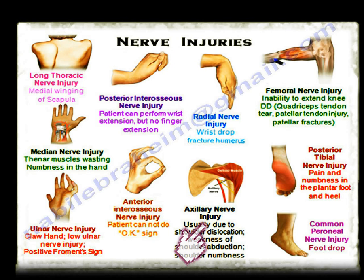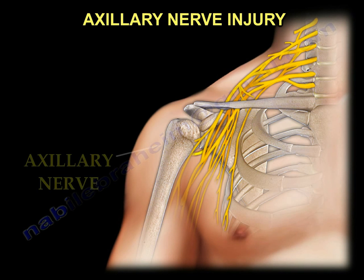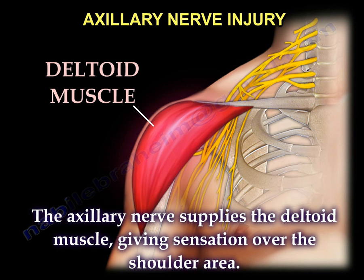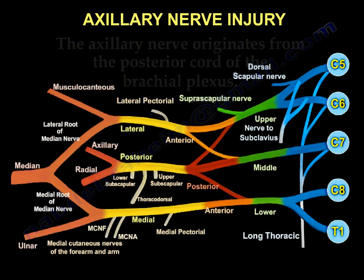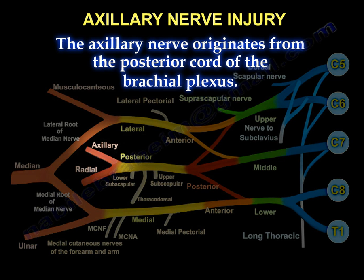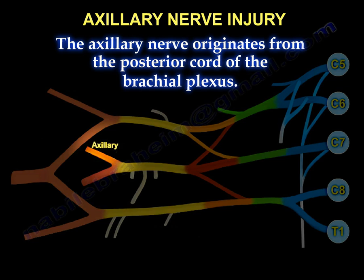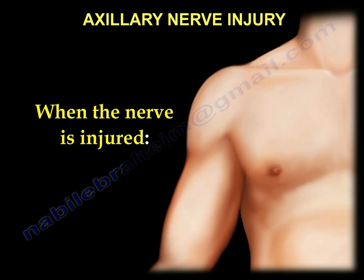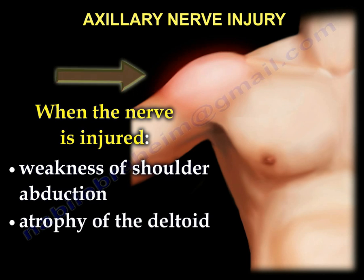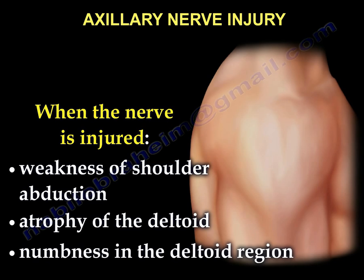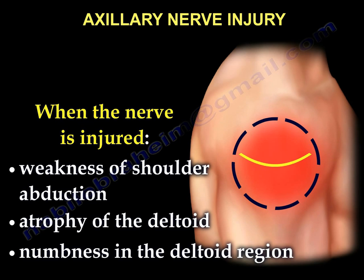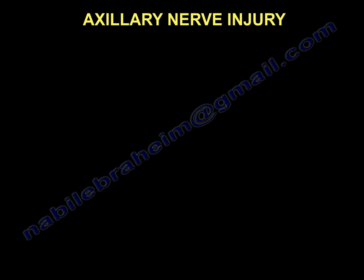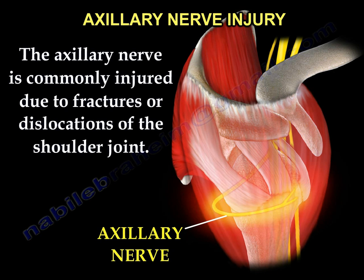Axillary Nerve Injury. The axillary nerve supplies the deltoid muscle, giving sensation over the shoulder area. The axillary nerve originates from the posterior cord of the brachial plexus. When injury to the axillary nerve occurs, there will be weakness of shoulder abduction, atrophy of the deltoid, and numbness in the deltoid region. The axillary nerve is commonly injured due to fractures or dislocations of the shoulder joint.